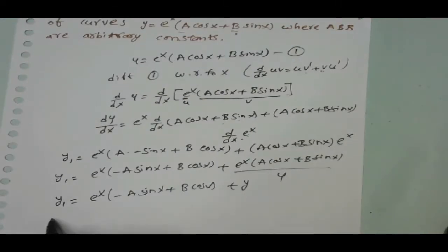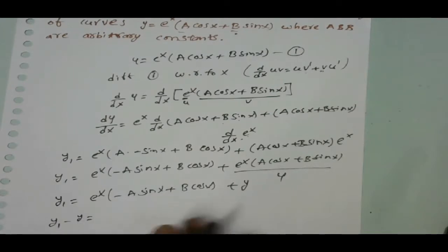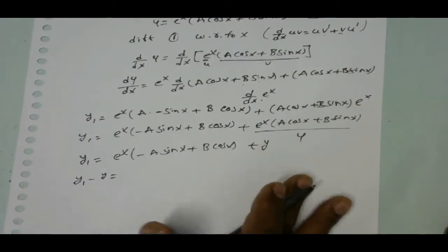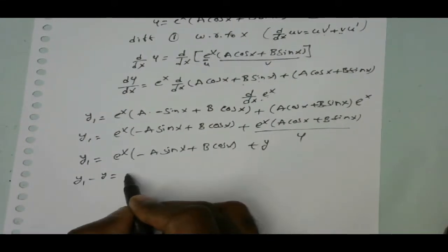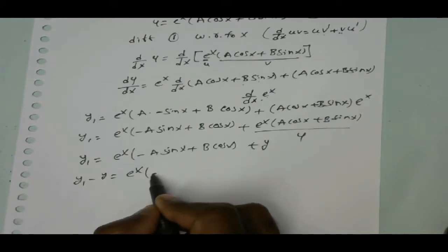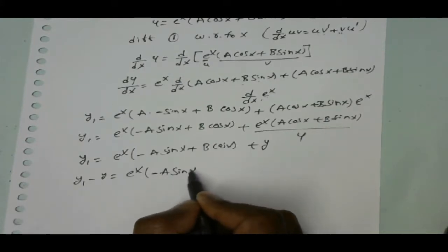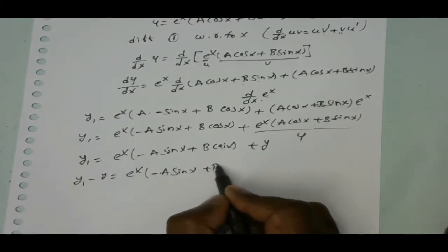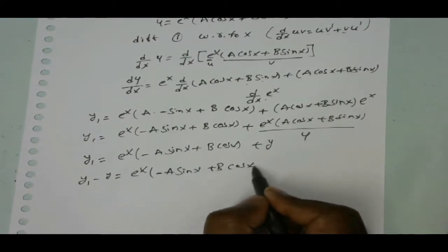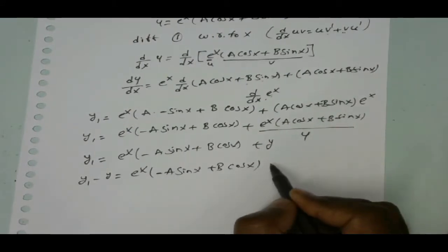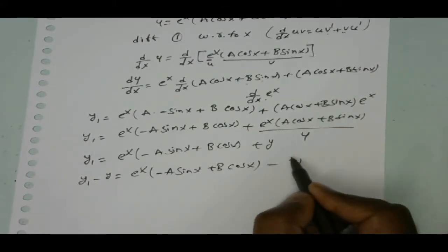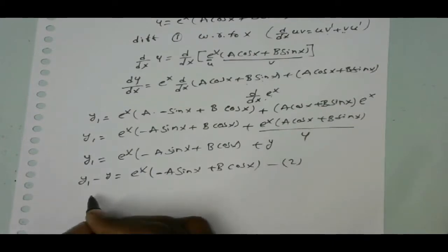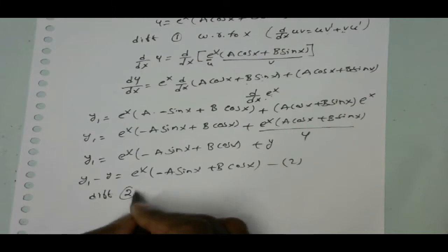Bringing y to the left side, that is y₁ minus y is equal to e power x of minus a sin x plus b cos x. I am taking this as the second equation. Now differentiate equation 2 with respect to x.